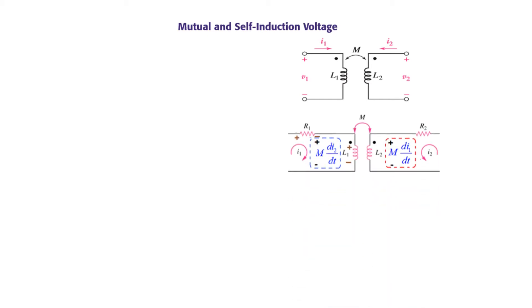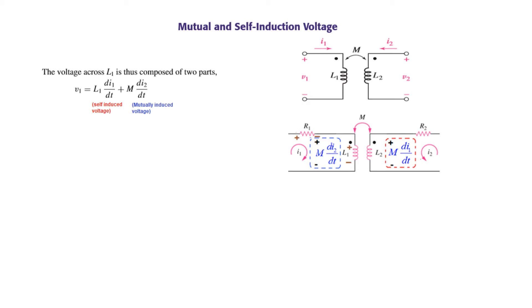The total voltage V1 will include the self-induced voltage drop across L1, which is L1·di1/dt, plus the mutually induced voltage due to current I2, which is M·di2/dt. This is the general way of representing V1. Similarly, V2 is represented as L2·di2/dt plus M·di1/dt, which is the mutually induced voltage.